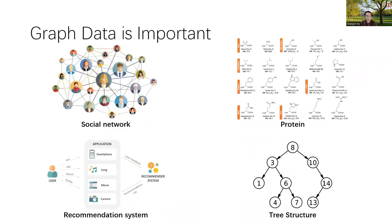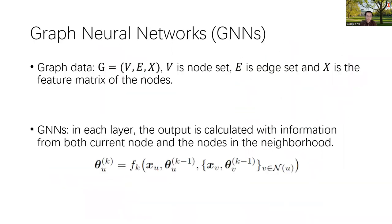Graph data is very important and common in practice. For example, social networks, proteins, recommendation systems, and tree structures — all these different kinds of data can be modeled in a graph structure. A graph structure is represented with three different components: the node set, the edge set, and the feature matrix of the nodes.